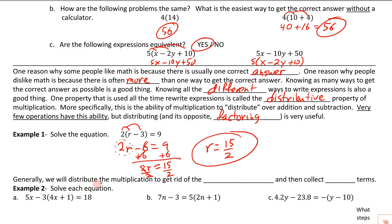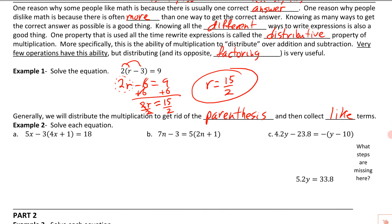Generally, we're going to distribute the multiplication to get rid of parentheses — it's tough to solve an equation that still has parentheses in it. Then we collect like terms if needed, and solve. Let's take a look at some problems like that.